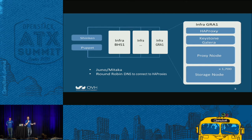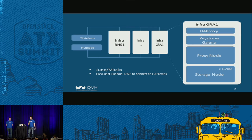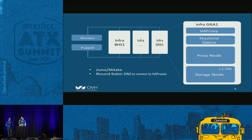The proxy node holds the account and container auditor jobs. That's why we had to use hardware with good IOPS. Then we have the large storage nodes. Here we have different hardware profiles. The goal is to have the right ratio between CPU power and space available on disks.